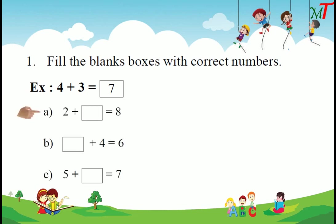First problem: 2 plus dash equals 8. Here, 2 means 2 dots. Next we count: 3, 4, 5, 6, 7, and 8. So how many dots did we add? 6 dots. So 2 plus 6 equals 8.